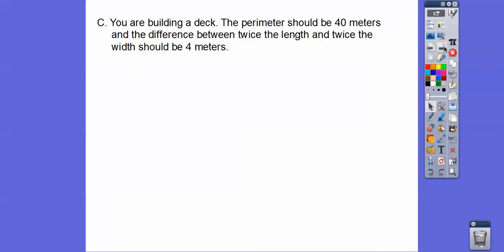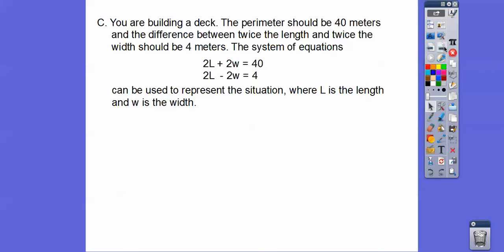All right, then they're going to have a couple of application problems. And don't let the word problem scare you. They give you the system of equations in all of these, you guys. So we'll generate those in the next module when we get to module 12. So anyways, you're building a deck, and the perimeter should be 40 meters, and the difference between twice the length and twice the width should be 4. Okay, then they give us this system right here. So the system of equations, we're going to learn how to generate these in the next module. But in this lesson, they're going to give these to you right here.